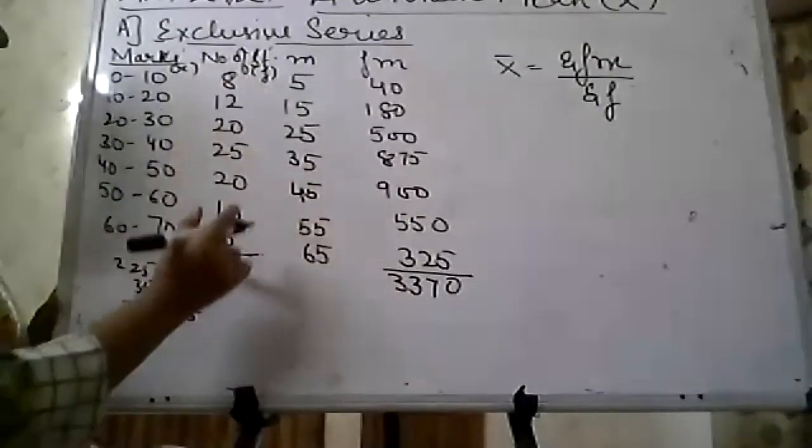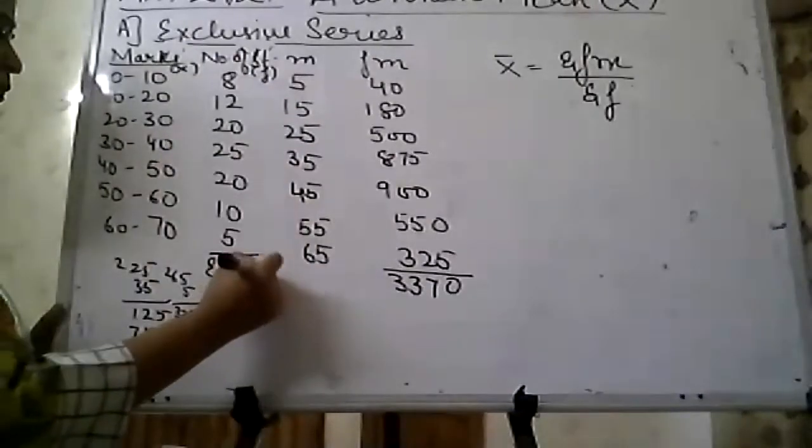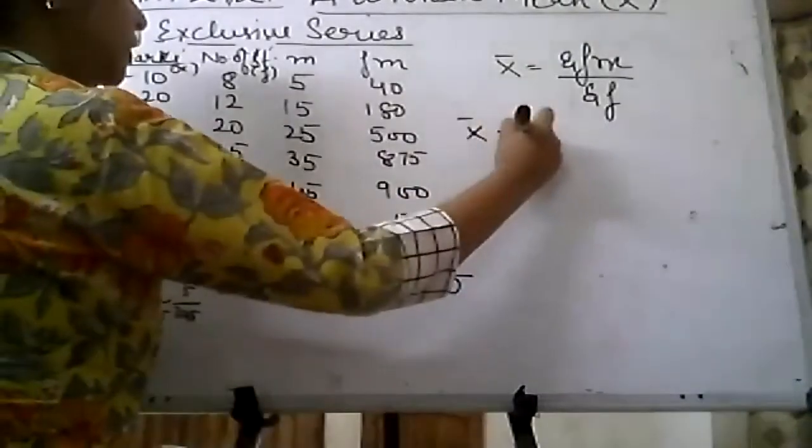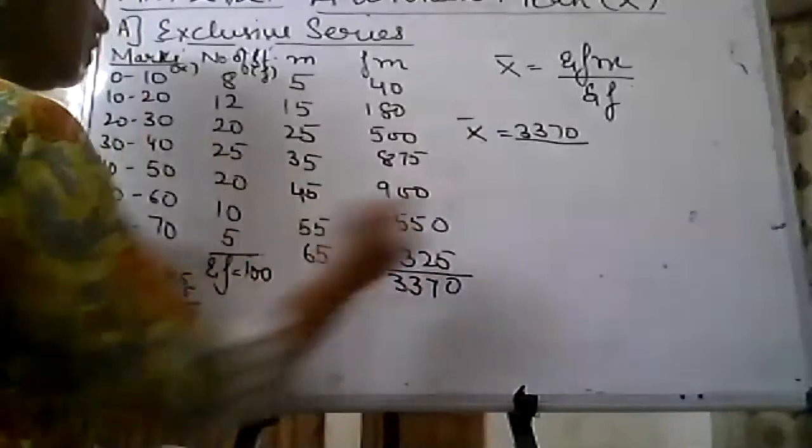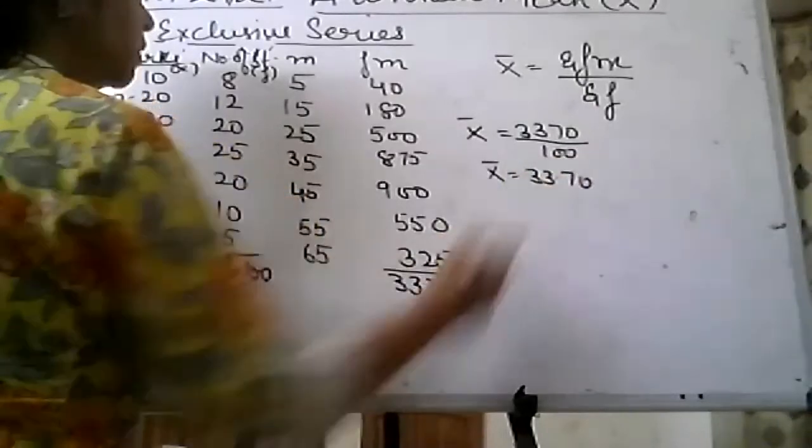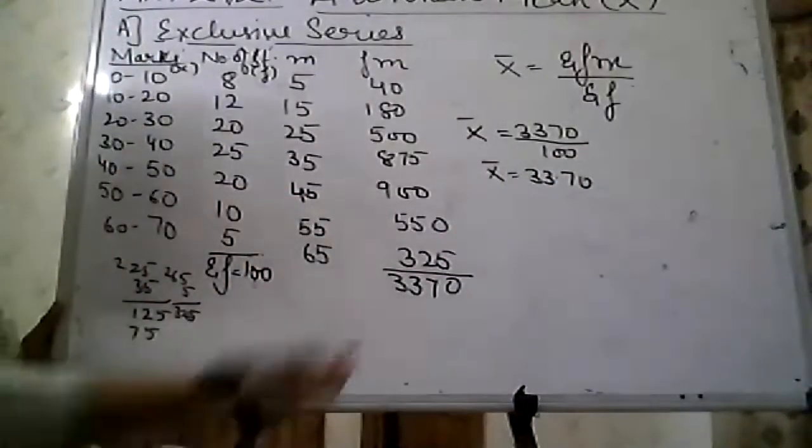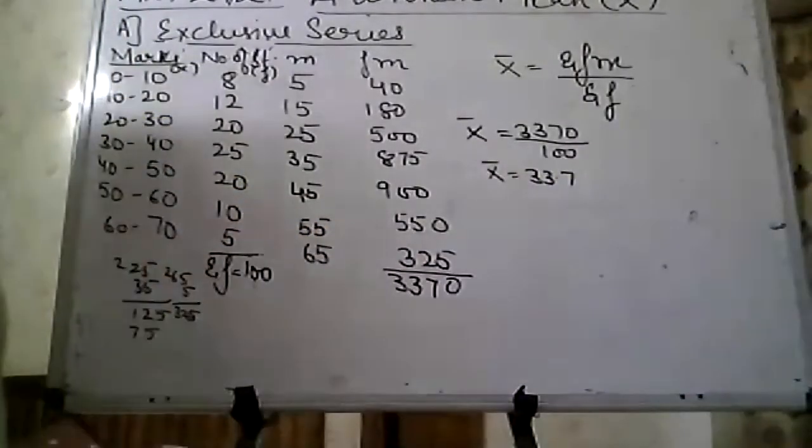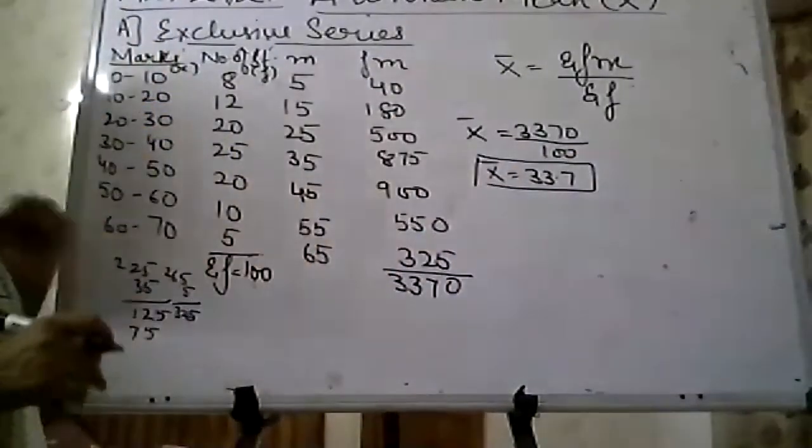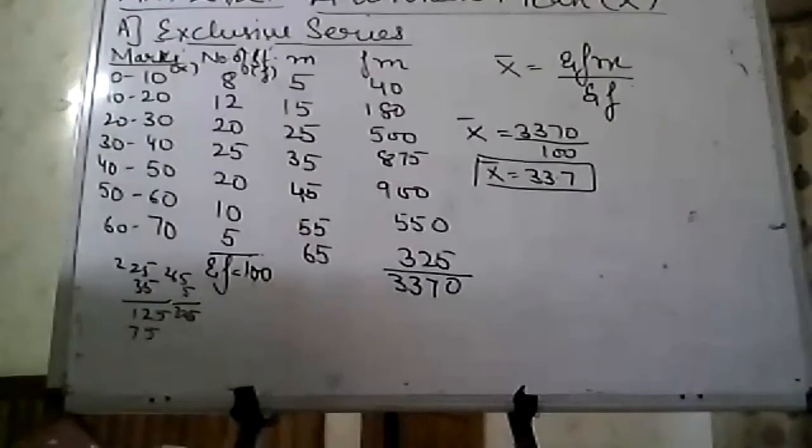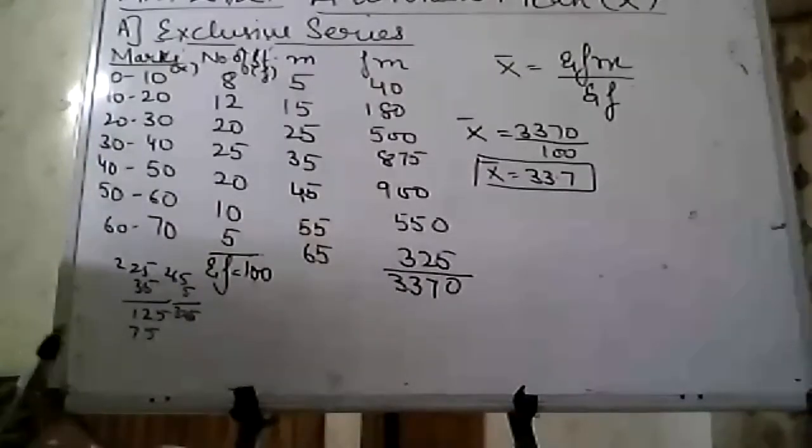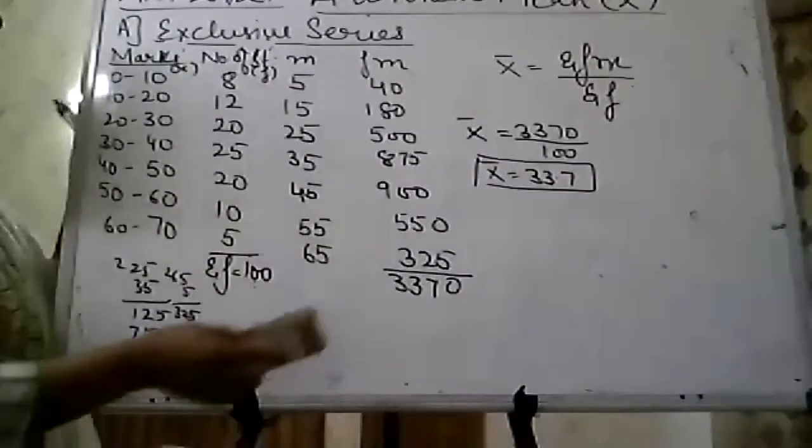So Σfm, we want its total: 40 plus 180 plus 500 plus 625 plus 875 plus 900 plus 550 plus 325 equals 3370. Σf equals 100. Now put the values in the formula. Σfm is 3370 divided by 100, so x̄ comes out to be 33.70. The average marks of this class is 33.7.